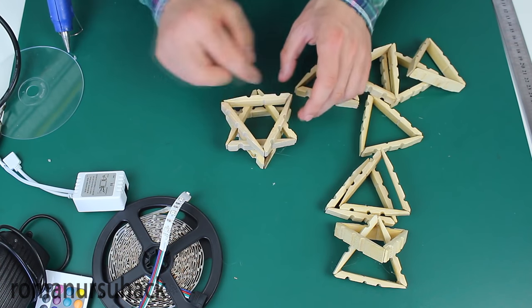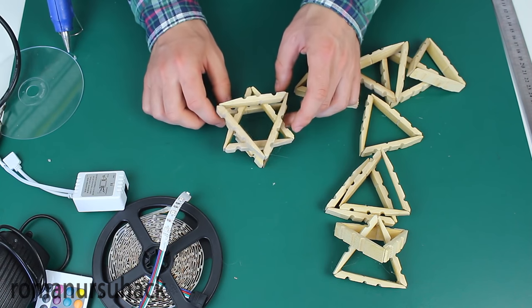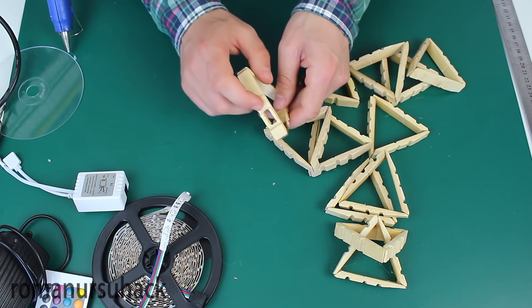Now we connect the semi-products between each other to get a star shape. Pay attention to the fact that the first blank should have an opening.